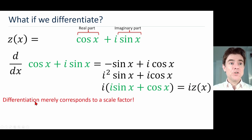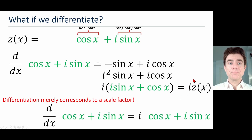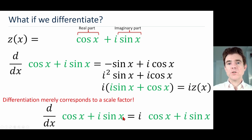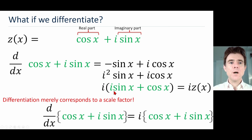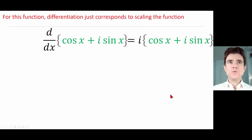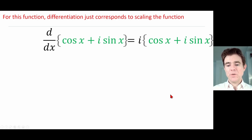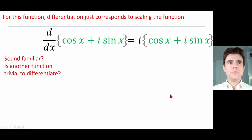Differentiation here merely corresponds to a scale factor, albeit a very special scale factor. The differential operator on that complex function is simply i times that same function. So we've made the process of differentiating here extremely simple — for this particular choice of z(x), differentiation just corresponds to scaling z(x) by i. We've trivialized that process of differentiation.